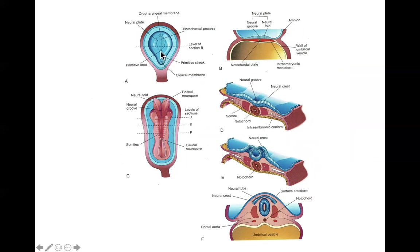Down here you have the primitive streak. We've got the primitive node, which here they call the primitive knot. Primitive node, primitive pit — the notochord grows out of the primitive pit. As soon as the notochord grows through the deeper layers of tissue, neurulation begins and we have a neural plate forming. As the neural plate forms, it begins to thicken near the center. It forms two ridges called the neural folds with a groove in between called the neural groove. This should all be review.